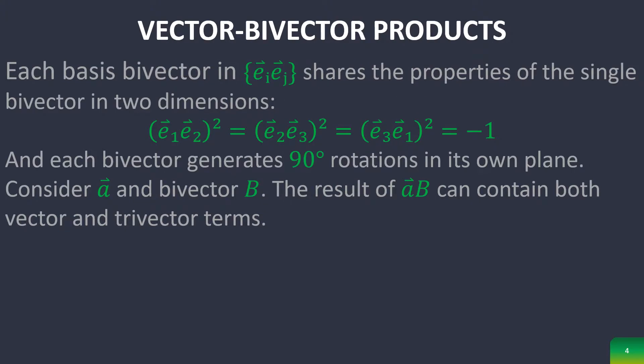So each basis bivector in this space shares the properties of the single bivector in two dimensions, meaning they all square to negative 1, and they all generate 90 degree rotations within their own plane.